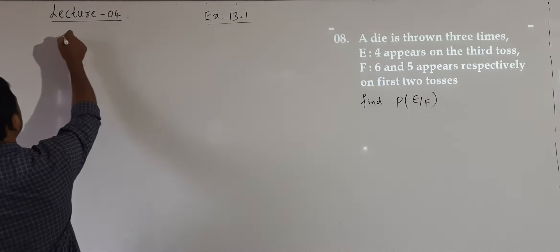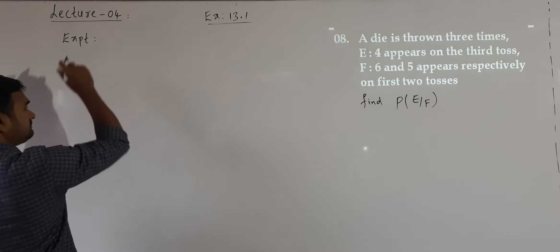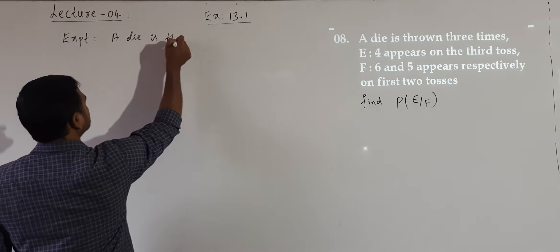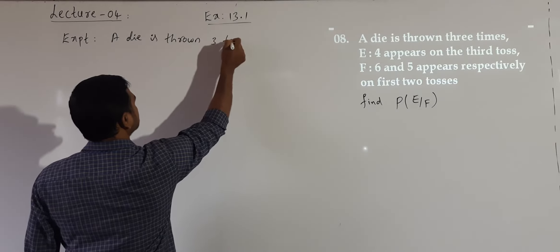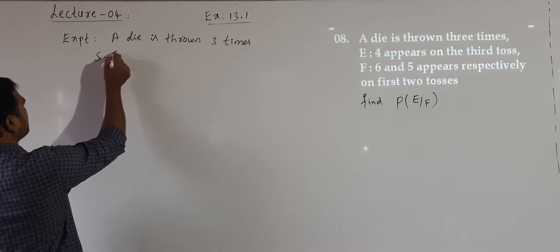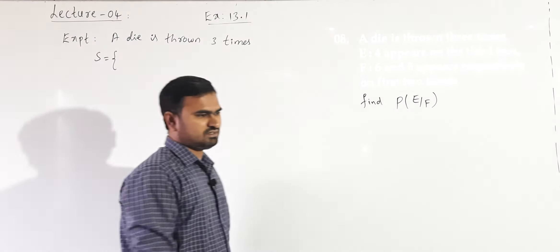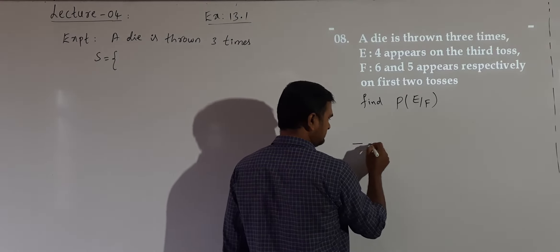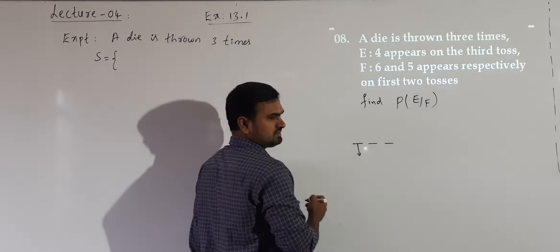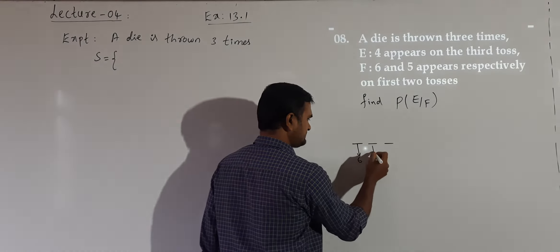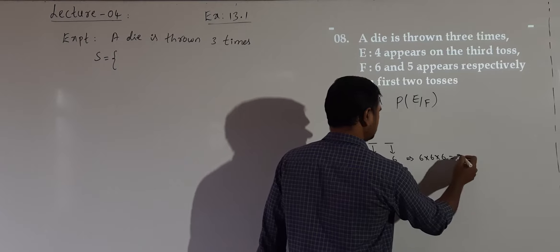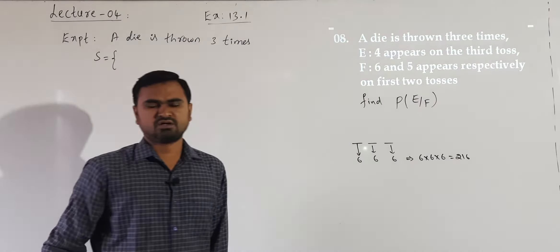The experiment here is that a die is thrown three times. When we throw a die three times, we get a result on the first, second, and third throw. Each throw can result in any one of the six numbers 1, 2, 3, 4, 5, 6. So the total number of outcomes is 6 × 6 × 6 = 216.